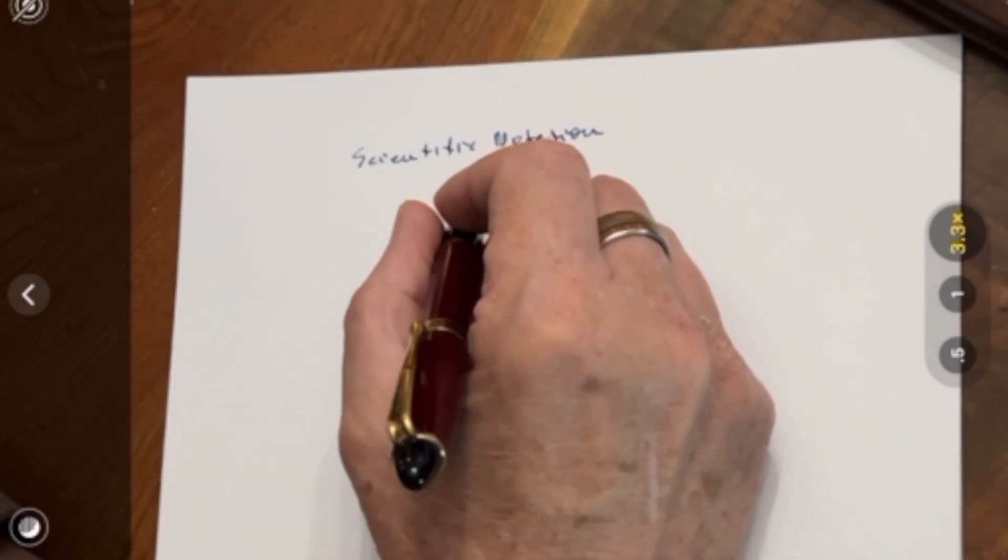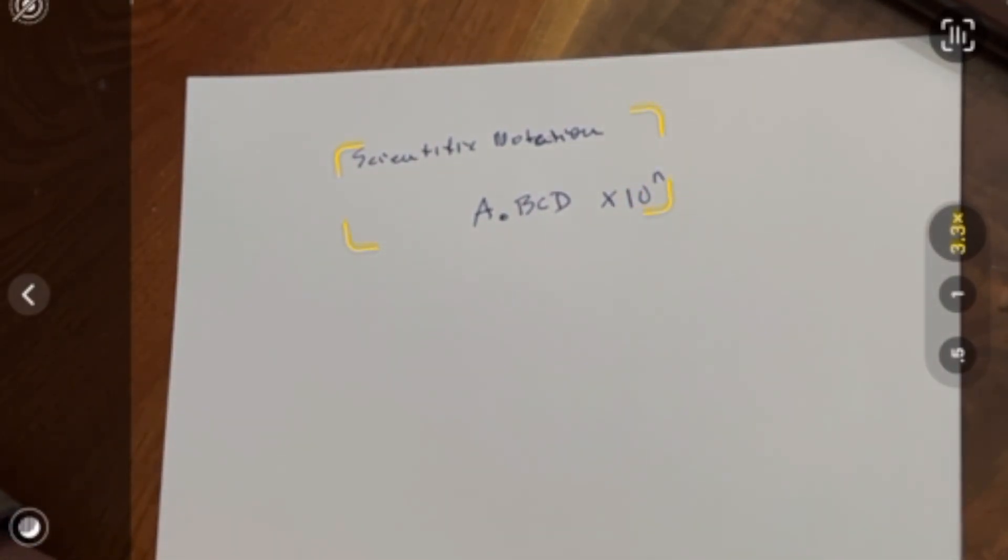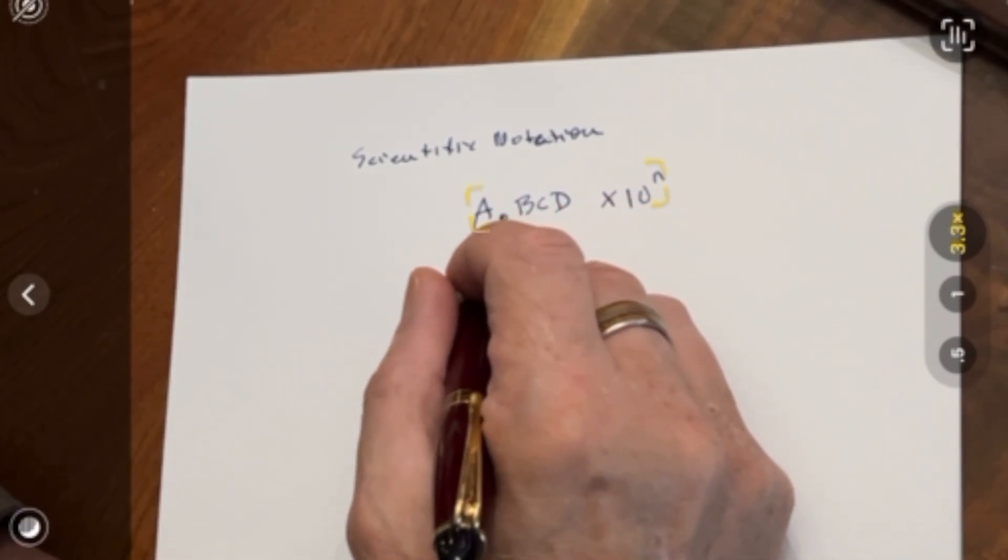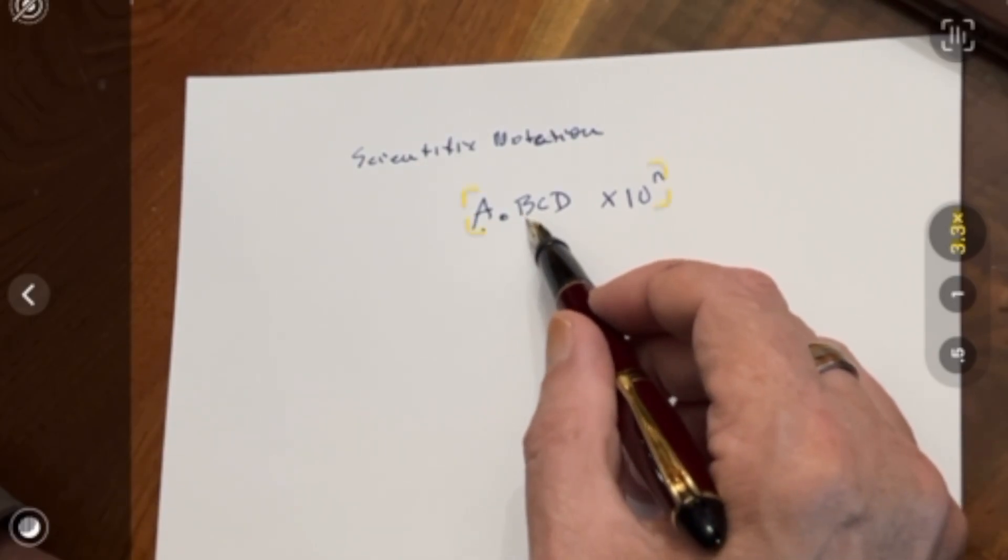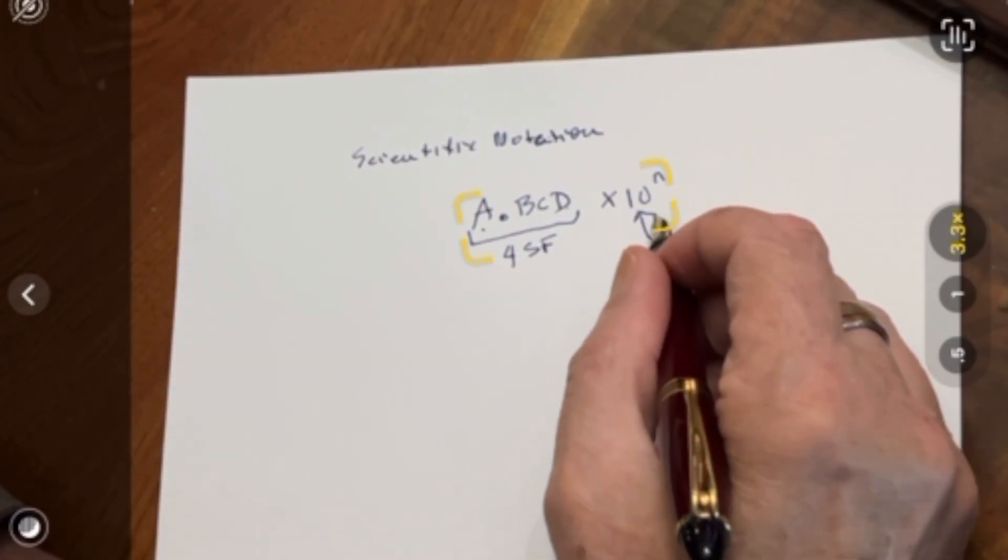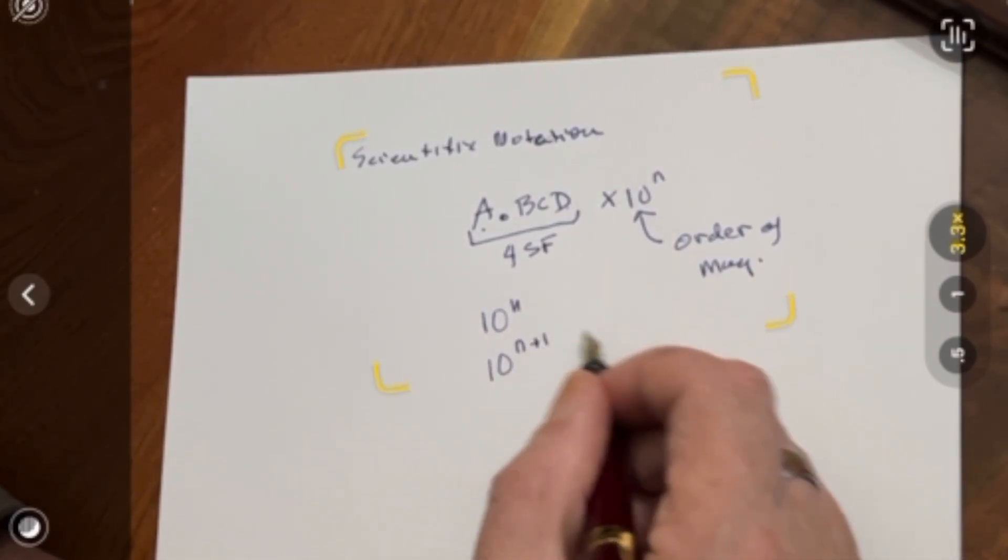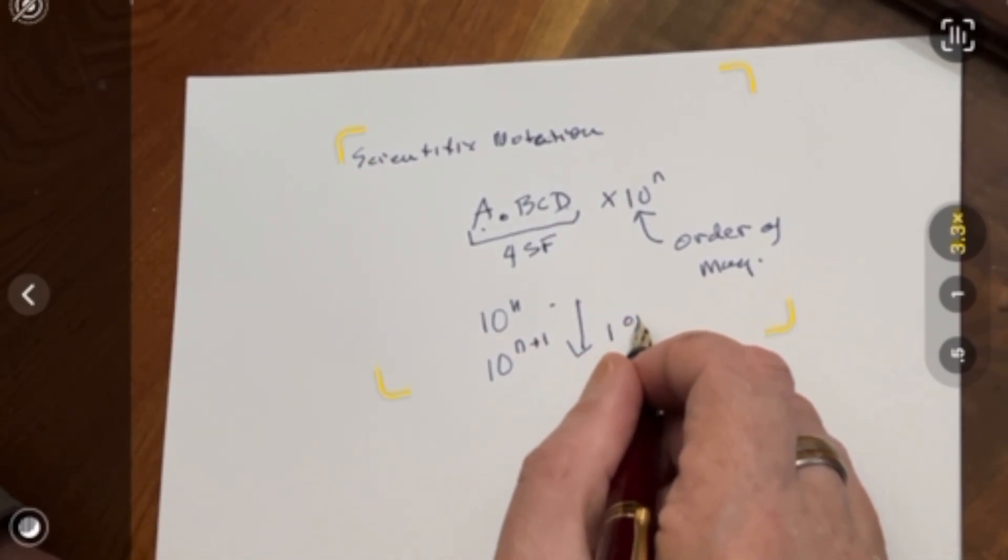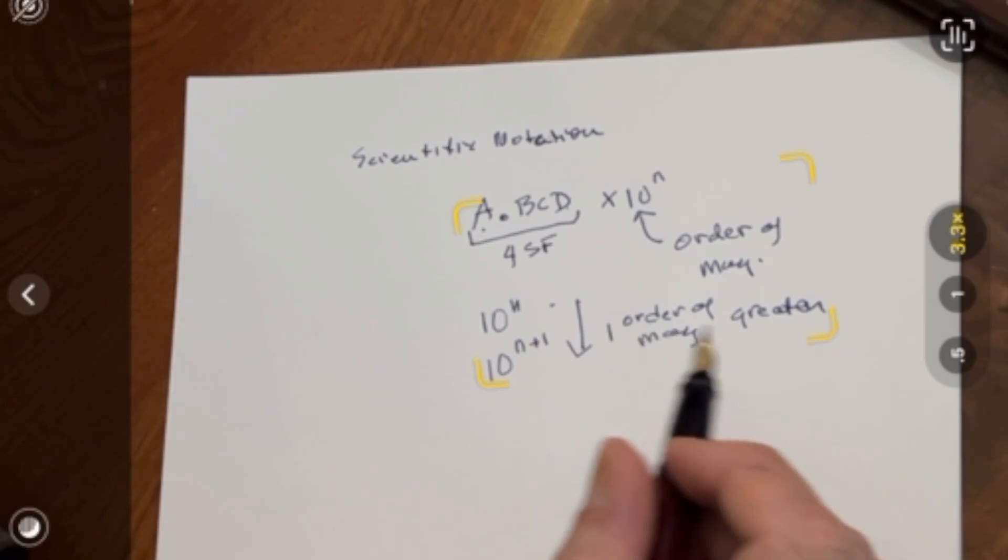What scientific notation does is it reduces your numbers to a standard form that gives you a lot of information. For example, you're going to have a number A with a decimal place, and then you're going to have B, C, and D, and then it's going to be multiplied by 10 to some power, 10 to the power of N. When we do that, we can actually count the number of significant digits. Remember that we have a single digit to the left of the decimal place in scientific notation, and then all numbers to the right of the decimal place are also considered significant. That has four significant figures. This is the order of magnitude. If you had 10 to the N and then 10 to the N plus 1, the difference between the two is that this is one order of magnitude greater. It has to do with the power of 10 that you're multiplying by. Each order of magnitude is different by a factor of 10 from the orders of magnitude above and below it.